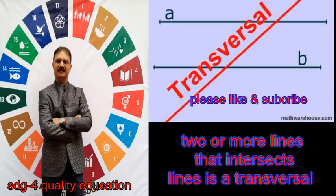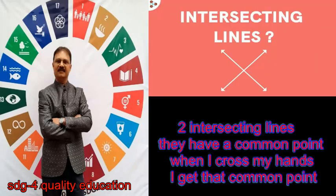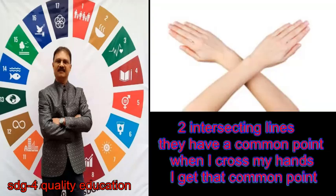Two or more lines that intersect — that line is a transversal. Two intersecting lines have a common point. When I cross my hands, I get that common point.